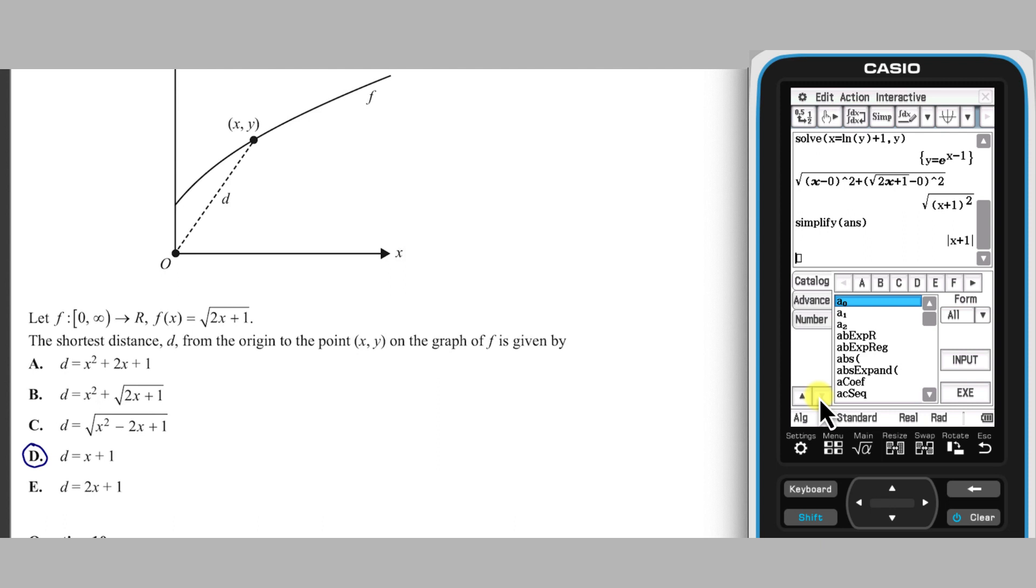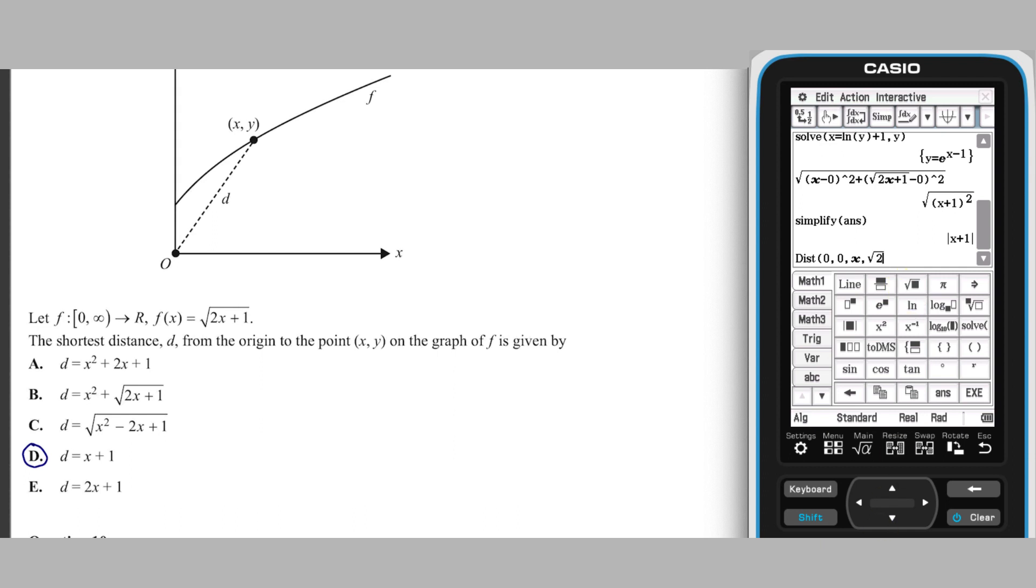To see only user defined functions, tap the formula drop down arrow and choose user. Tap the function required, in this case dist, and tap input. This function has been defined to operate on four inputs, being the coordinates of the two points under consideration. These are separated by a comma.